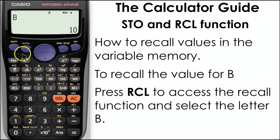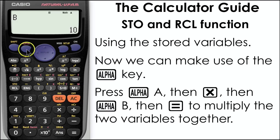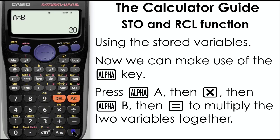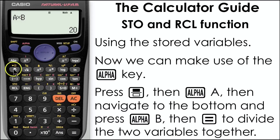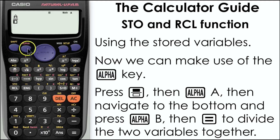For the next task we do need to make use of the alpha key. We're going to do a multiplication using the values that we stored. Press alpha and A, times alpha and B, and that will multiply our two values together. If I use the fraction button and then alpha A, navigate down to the bottom and alpha B, and press equals, I can divide the two variables.